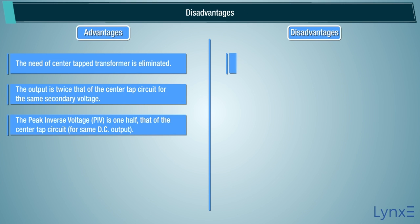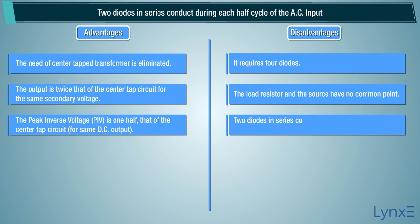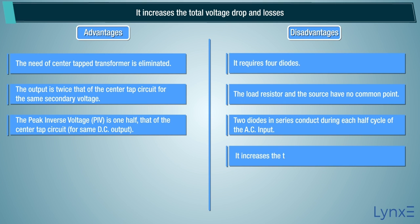Disadvantages. It requires four diodes. The load resistor and the source have no common point. Two diodes in series conduct during each half cycle of the AC input. It increases the total voltage drop and losses.